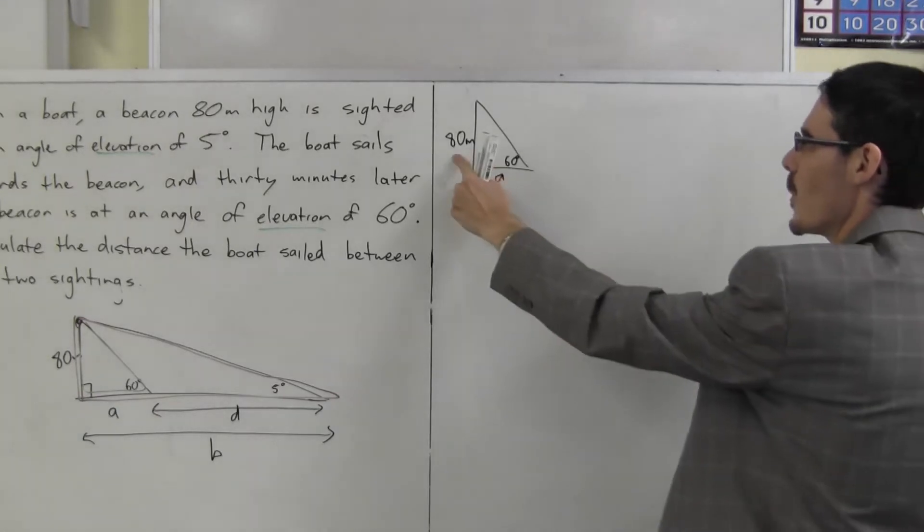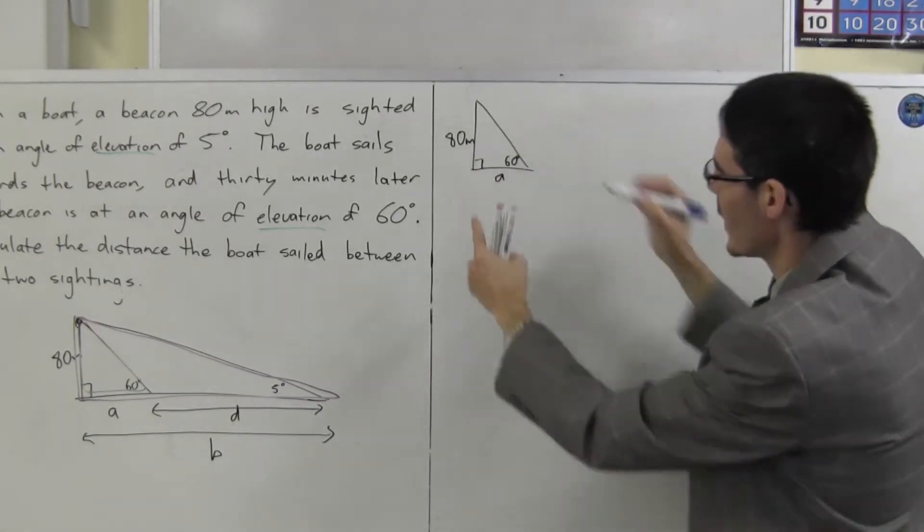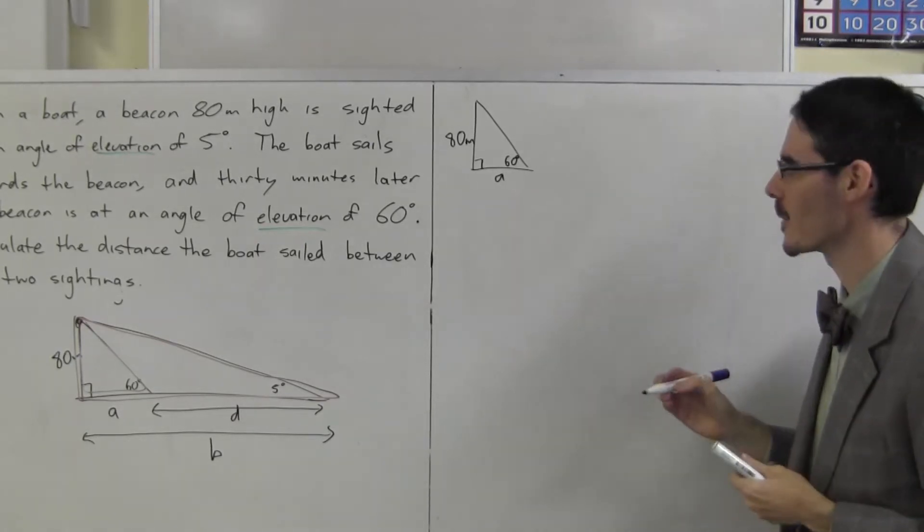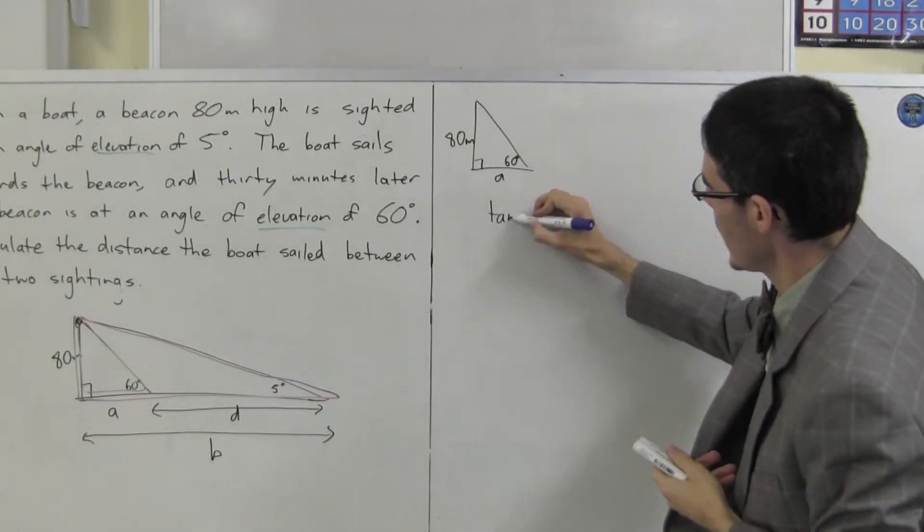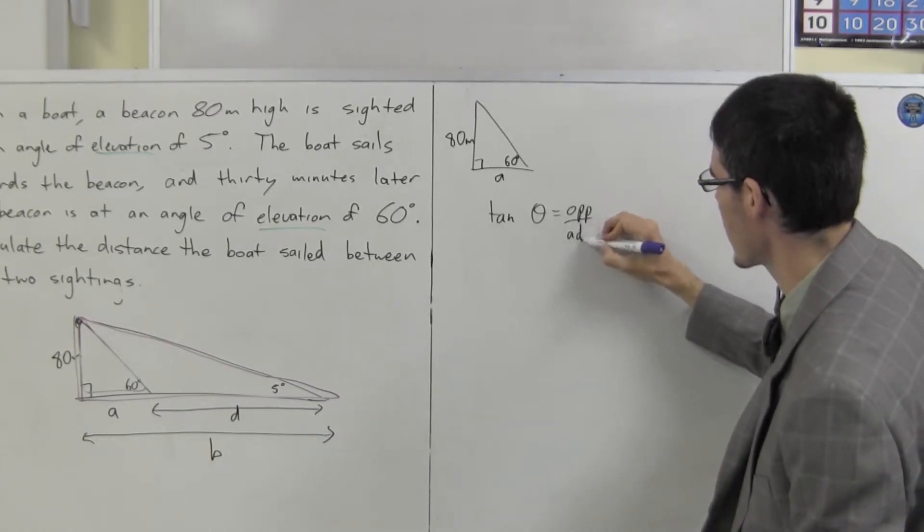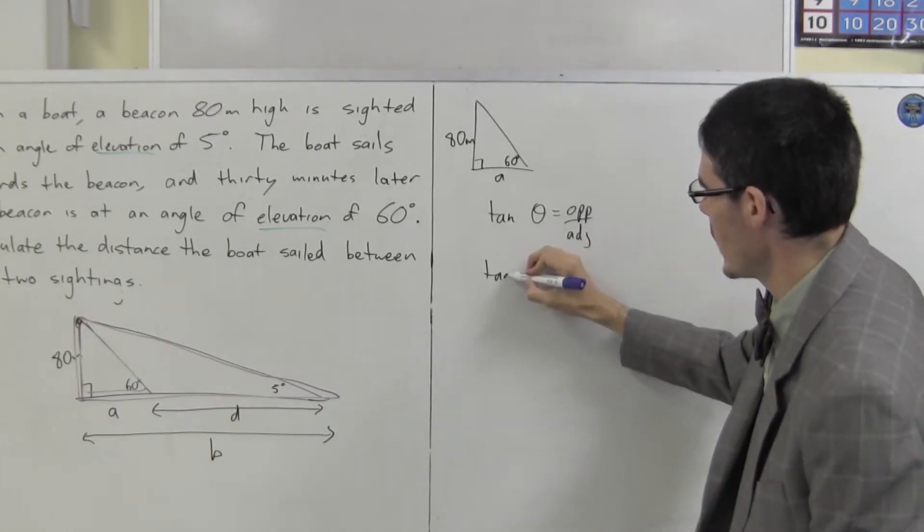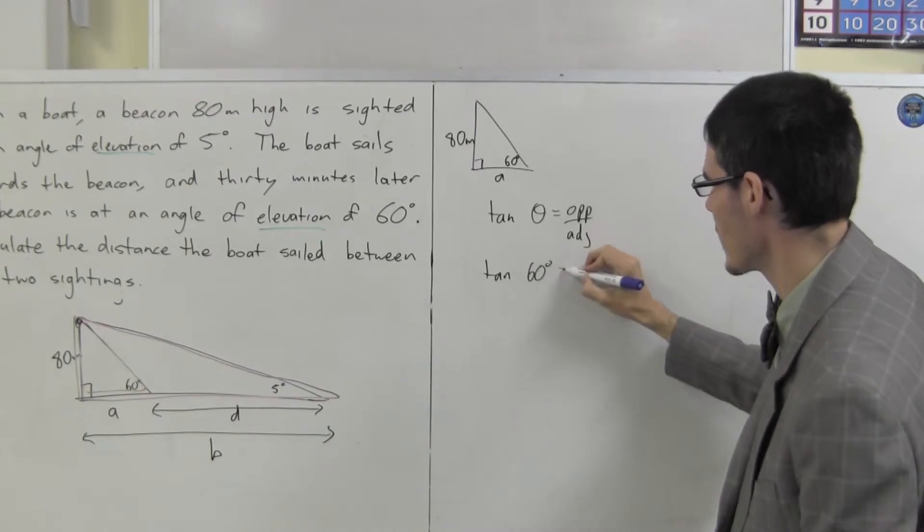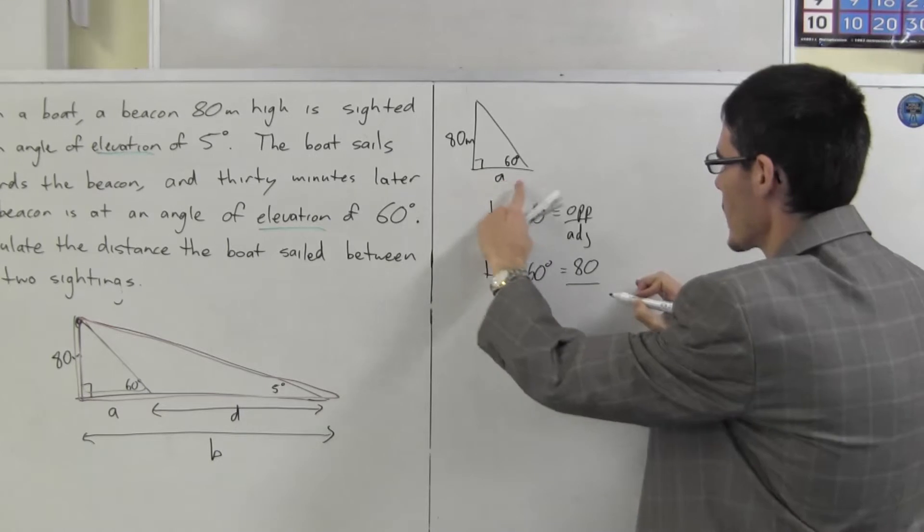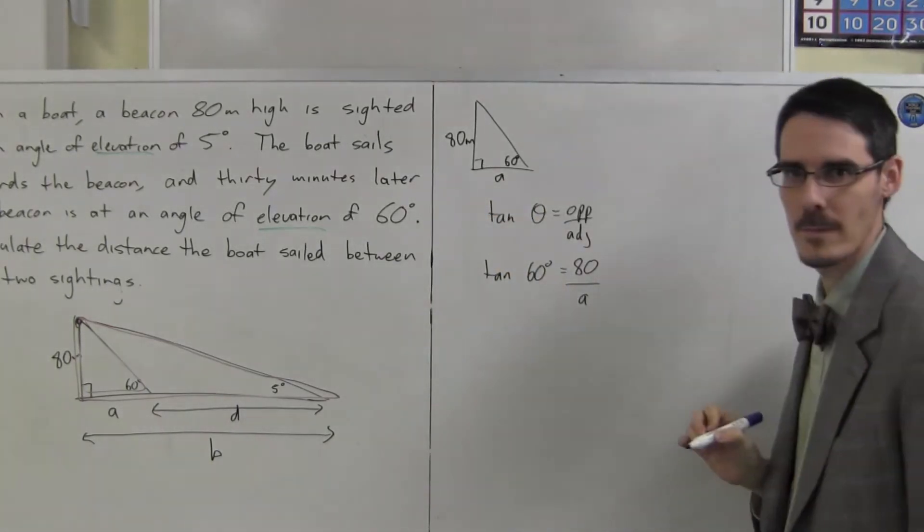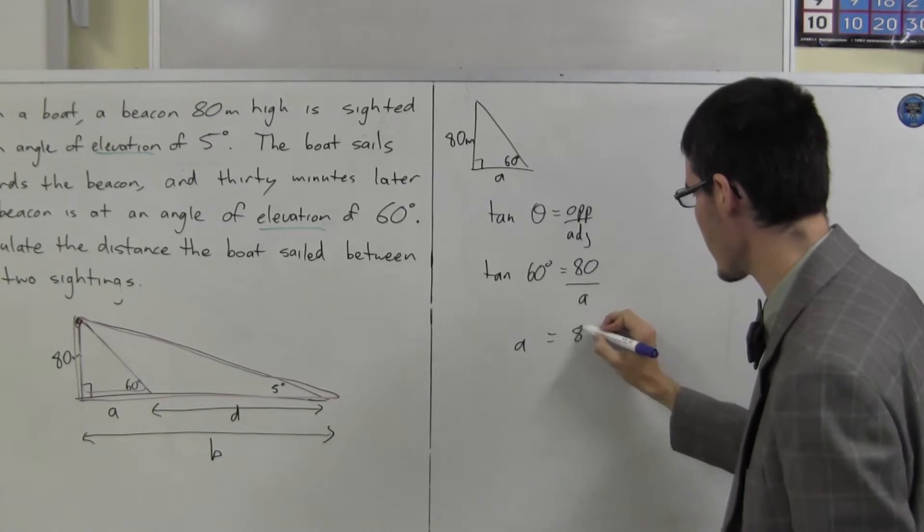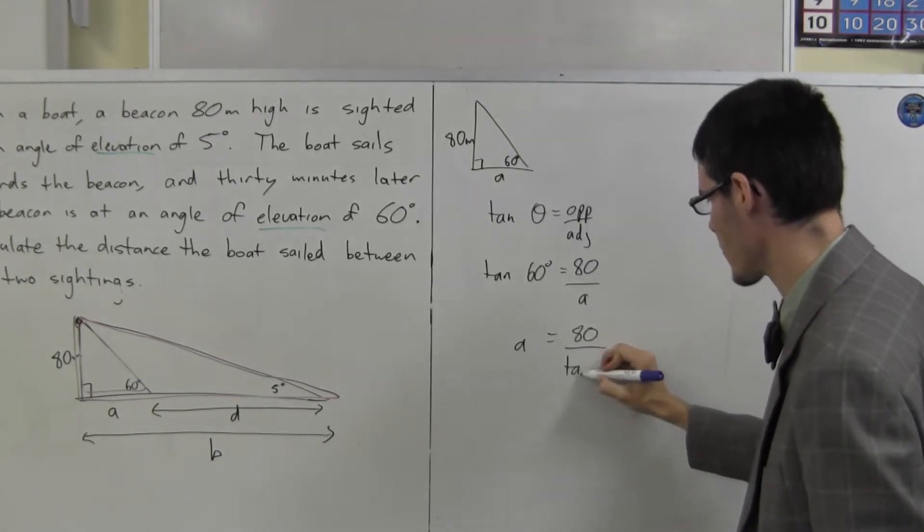Opposite side. The right angle, sorry. Opposite side. Adjacent side. I'm using tan. Tan of my angle is opposite on adjacent. Tan of 60 degrees is opposite 80 on adjacent A. Cross multiply. A is 80 on tan 60.